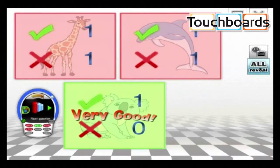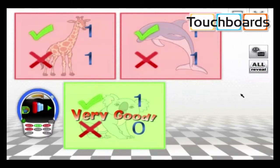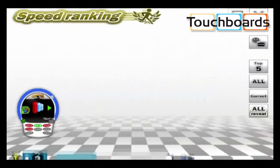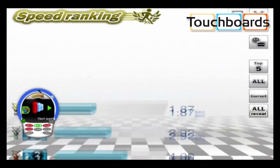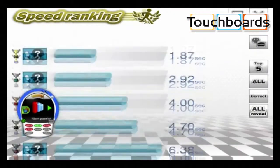After any question, you can show the speed ranking feature. The speed ranking feature is located at the top, and when we click on that, we can see who answered the quickest.